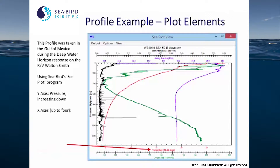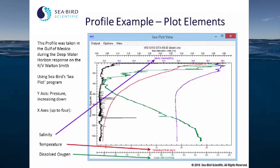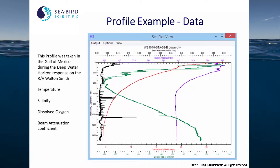The suite of instruments includes temperature, salinity, dissolved oxygen, and the beam attenuation coefficient. The data that we collect during a profile gives us important clues as to what's happening in the water column at the time that we take the measurements.